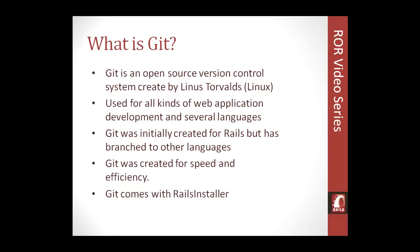If you don't know what Git is, that's fine — we're just going to learn the basics here, enough to be able to use it. Git is an open source version control system created by Linus Torvalds, the creator of Linux. It's used for all kinds of web applications — initially created for Ruby on Rails but now supports Java, PHP, and many other languages and frameworks. Git was created to track your files and any changes you make within the app.